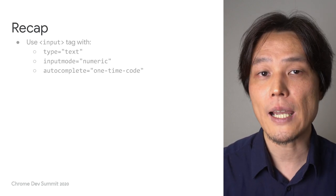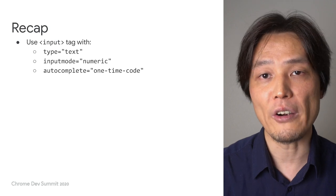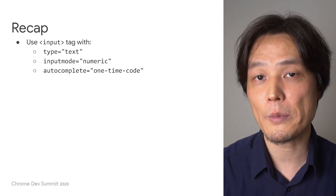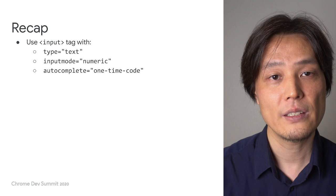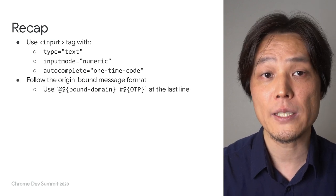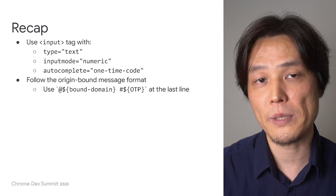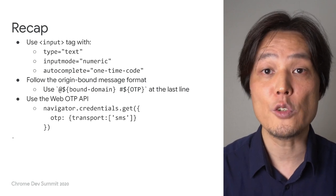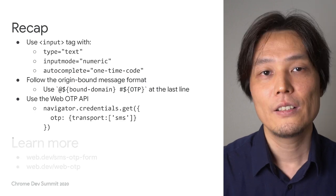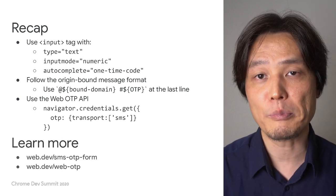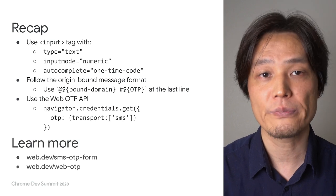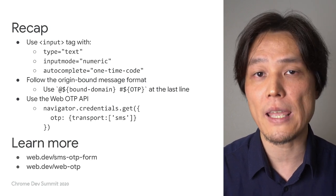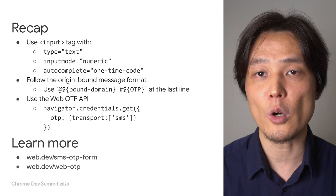Finally, let me recap. When building an SMS OTP form, use type text, inputmode numeric, and autocomplete one-time-code for the input tag. Use the domain-bound message format for an SMS message delivering an OTP. Use the WebOTP API to assist the user entering an OTP. You can learn more about these best practices at web.dev/sms-otp-form, and more about the WebOTP API at web.dev/web-otp.